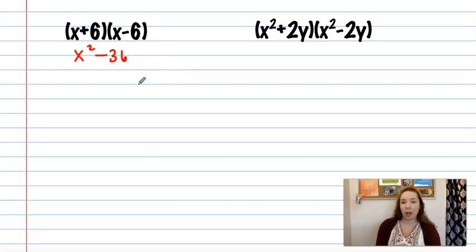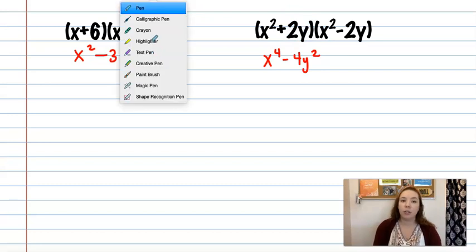Now, if you don't remember this shortcut, when you do the box method, you'll get the same answer. So, it's not a huge deal either way if you prefer the box method. Here, x squared squared gives us x to the fourth. 2y squared gives us 4y squared. And we're finished. That's our final answer.